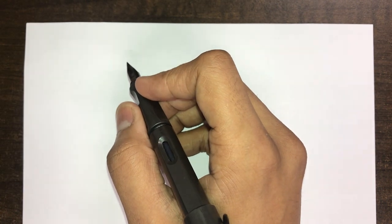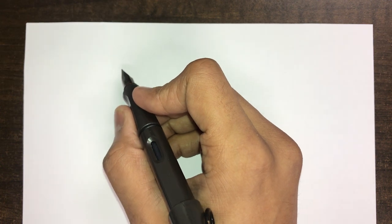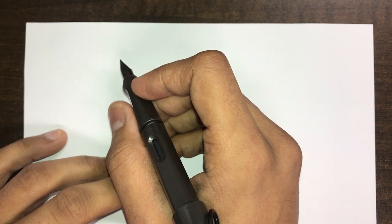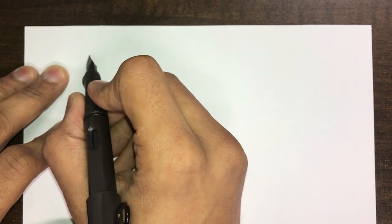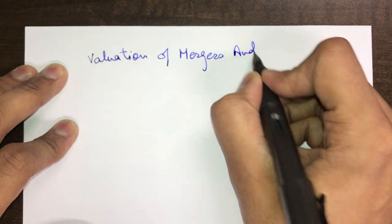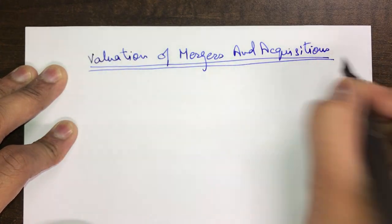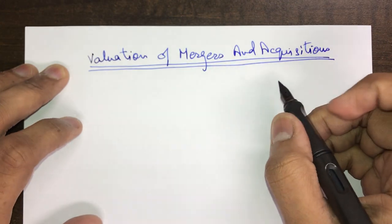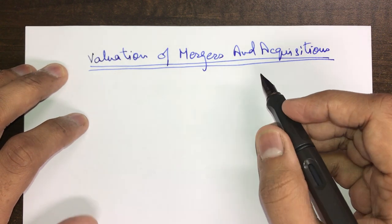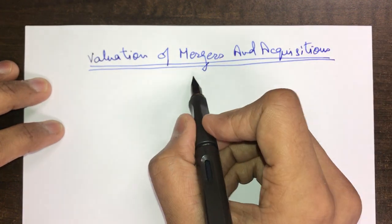Hi everyone, I am back with another short video, this time with reference to the subject BVM and SPM, which is paper number 20 of your CMA final examination. This paper is divided into two parts: BVM carries 50 marks and SPM carries 50 marks. Today I am going to discuss a very important chapter of the BVM portion — the chapter on Valuation of Mergers and Acquisitions. This chapter carries about 15 marks in your examination and usually carries huge weightage.